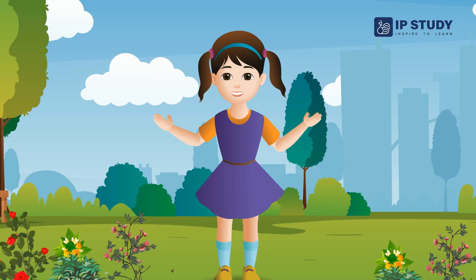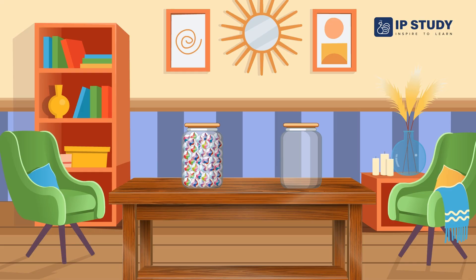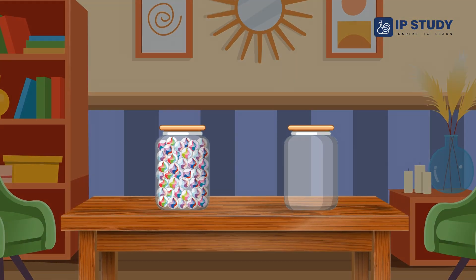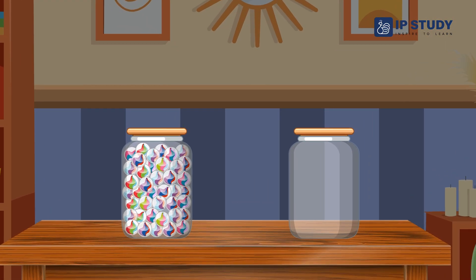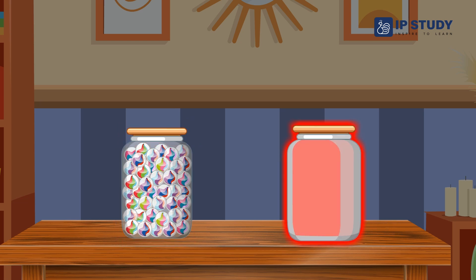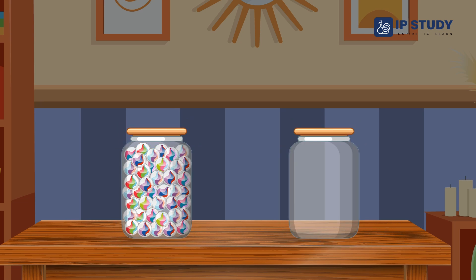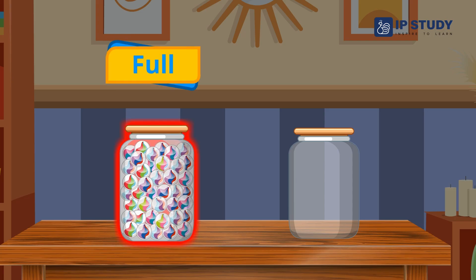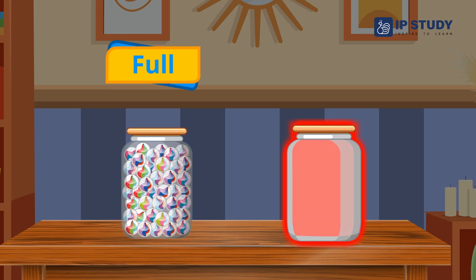So, let's start. Do you see the jars on the table? The first jar is full with marbles and there is nothing inside the second jar. So, the first jar is full and the second jar is empty.